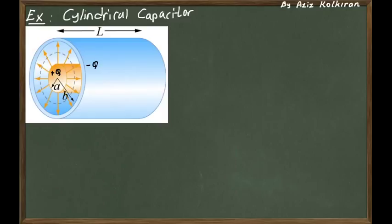Remember, for a metal capacitor — a two-conductor capacitor — one conductor must be positively charged, the other must be negatively charged, and the magnitude of the charges on these two conductors must be equal to each other. The length is given by L, the inner core has radius A, and the outer shell has radius B.